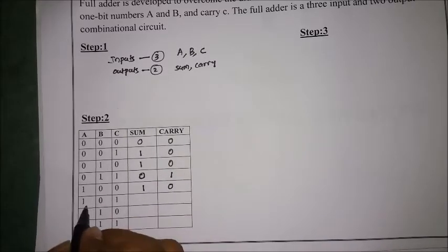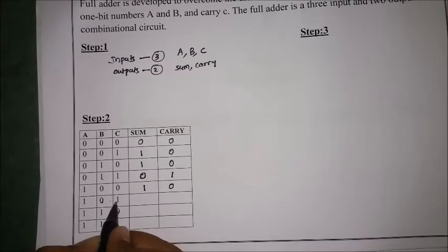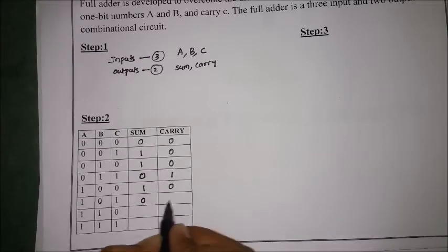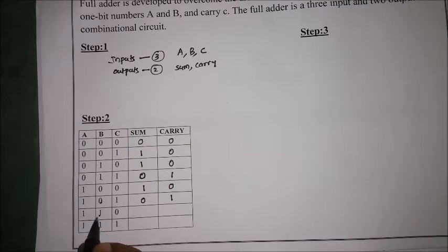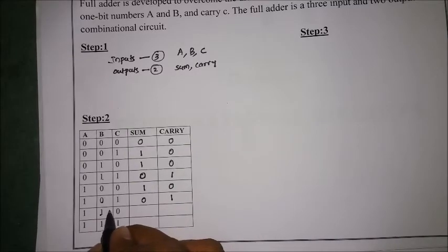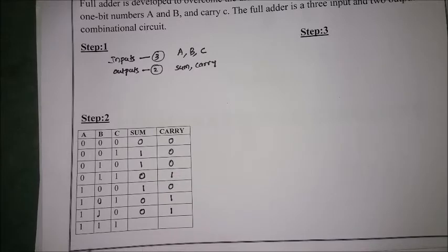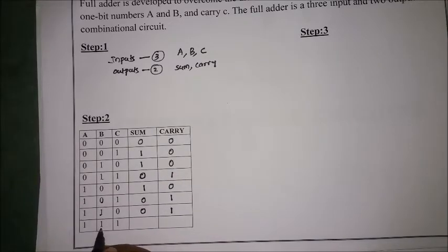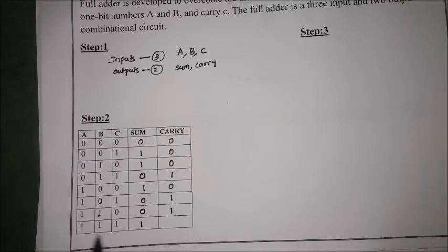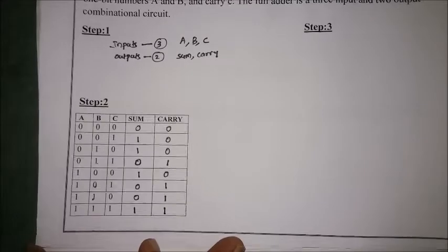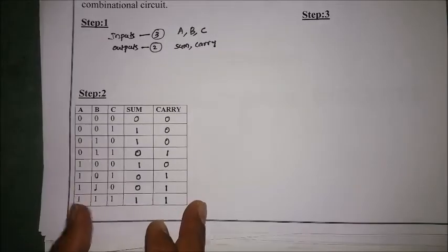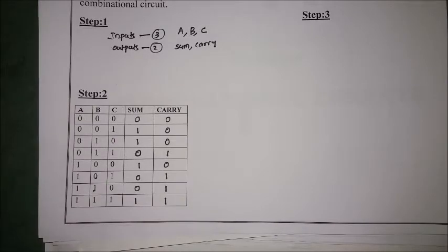For 1+0+0, sum is 1 and carry is 0. For 1+0+1, sum is 0 and carry is 1. For 1+1+0, sum is 0 and carry is 1. For 1+1+1, that is 1+1=0 carry 1, plus 1 gives sum 1 and carry 1. I have now generated the truth table for the given function.